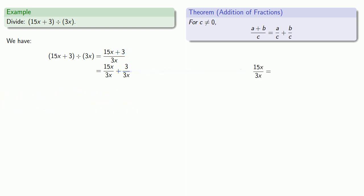15x over 3x—since numerator and denominator are both products, we can split this into a product of two fractions. Let's rewrite it and simplify. From the previous problem, we already figured out what 3 over 3x is. So our final expression: 5 plus 1 over x.